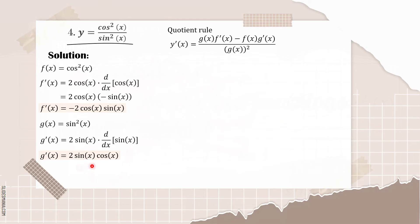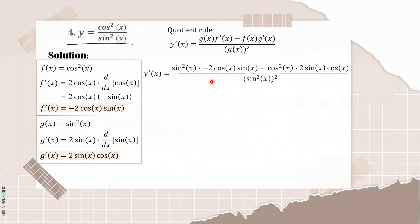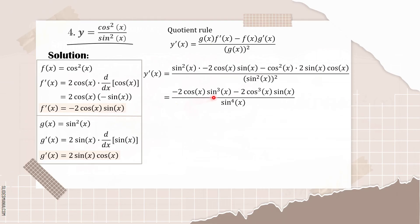Therefore, g prime of x is equal to 2 sine of x times cosine of x. Now that we have these values, we substitute into our quotient rule equation. Our g of x is sine squared of x, f prime of x is negative 2 cosine of x times sine of x, f of x is cosine squared of x, and g prime of x is 2 sine of x times cosine of x, all over g of x quantity squared, which is sine squared of x quantity squared. Multiplying things in our numerator results in negative 2 cosine of x times sine cubed of x, minus 2 cosine cubed of x times sine of x, all over sine raised to the fourth of x.